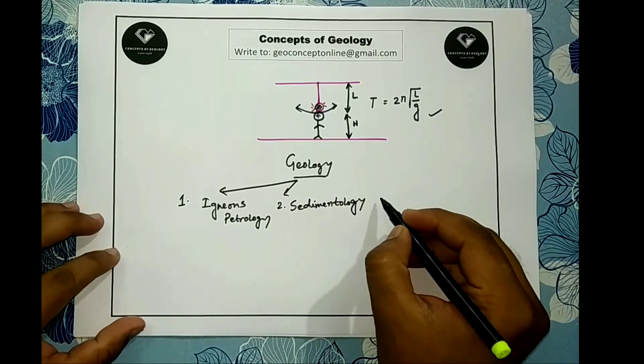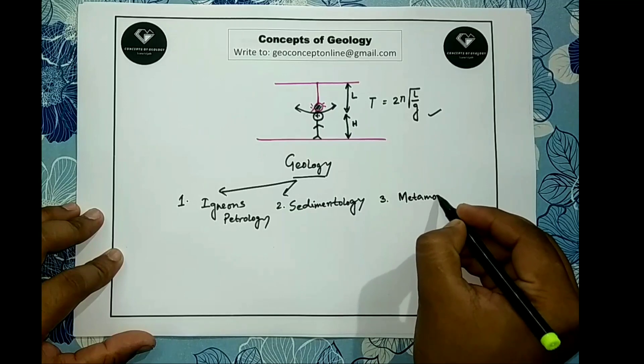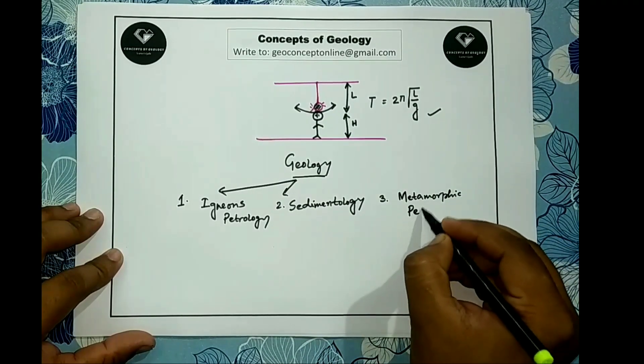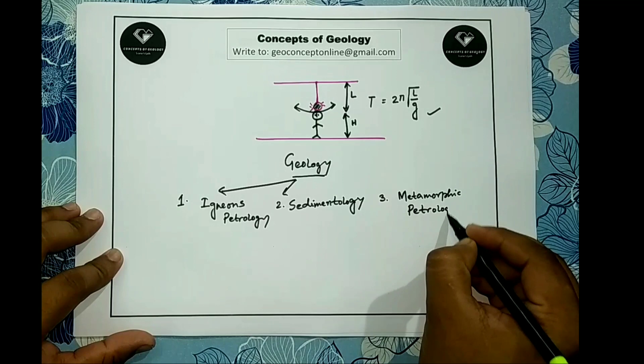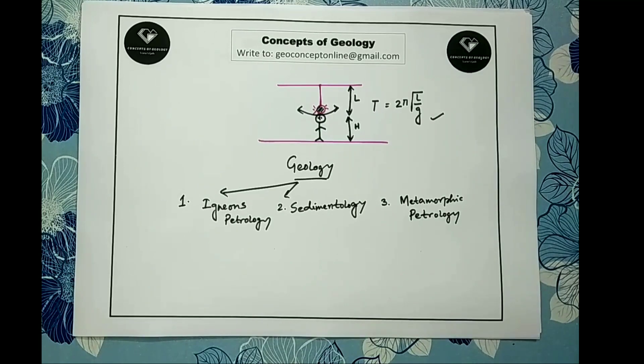The next branch will be metamorphic petrology. Metamorphic rocks are formed by metamorphism of an existing rock which was living in an unstable thermodynamic condition. The existing rock may be a sedimentary, may be an igneous, or even may be an older metamorphic rock which was living in thermodynamically unstable condition. That is the force of metamorphism.